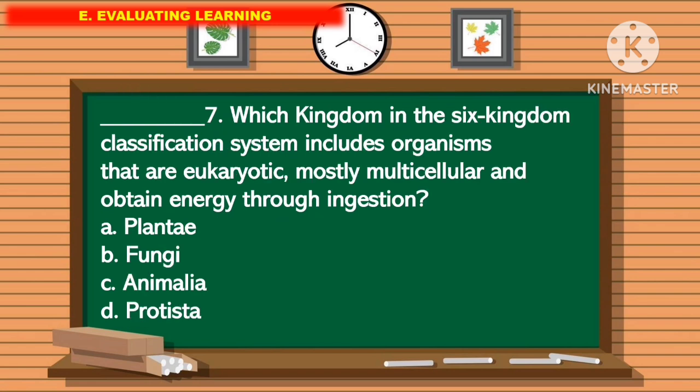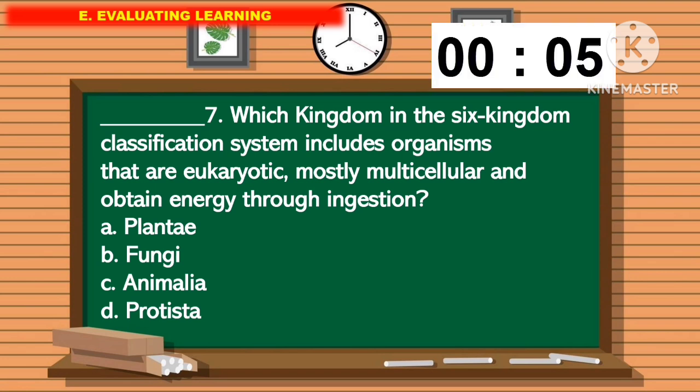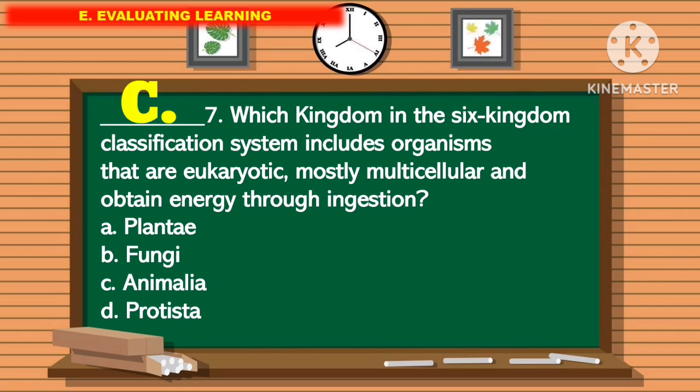For question number 7: which kingdom in the 6 kingdom classification system includes organisms that are eukaryotic, mostly multicellular, and obtain energy through ingestion? The correct answer is letter C.